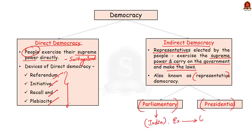In indirect democracy, the representatives elected by the people exercise the supreme power, carry on the government and make the laws. This type of democracy is also known as representative democracy, and it is of two kinds: parliamentary and presidential. The Indian constitution provides for representative parliamentary democracy under which the executive is responsible to the legislature for all its policies and actions. Universal adult franchise, periodic elections, rule of law, independence of judiciary and absence of discrimination are the manifestations of the democratic character of Indian polity.